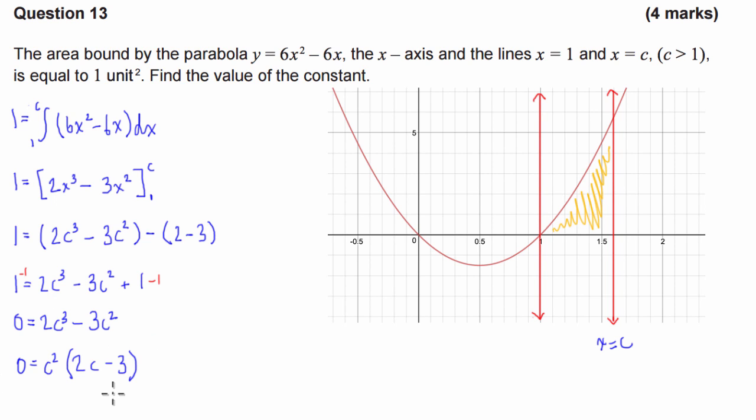And what we can get from this is that either c is equal to 0, but as you can see, that doesn't fit in with our condition here that c has to be greater than 1. So, that's not going to work, or 2c take 3 has to equal 0. So what we do now is we can just rearrange this, and we have a value of c is equal to 3 over 2.